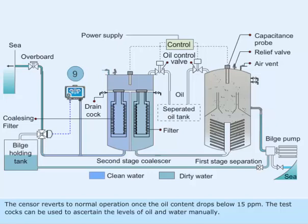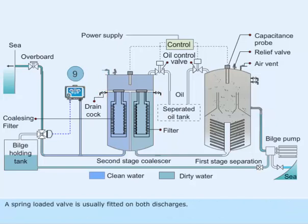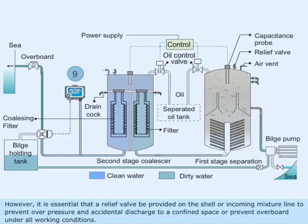The test coax can be used to ascertain the levels of oil and water manually. A spring-loaded valve is usually fitted on both discharges. However, it is essential that a relief valve be provided on the shell or incoming mixture line to prevent overpressure and accidental discharge to a confined space, or to prevent overboard discharge under all working conditions.